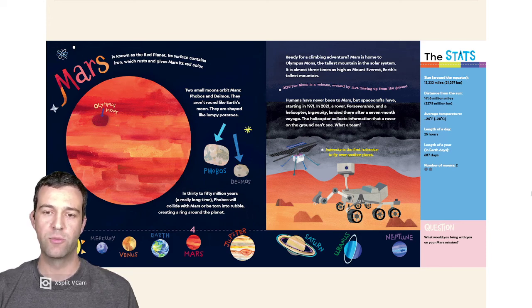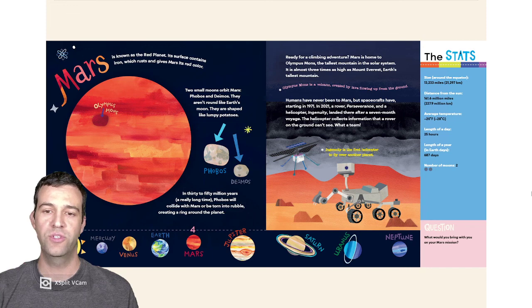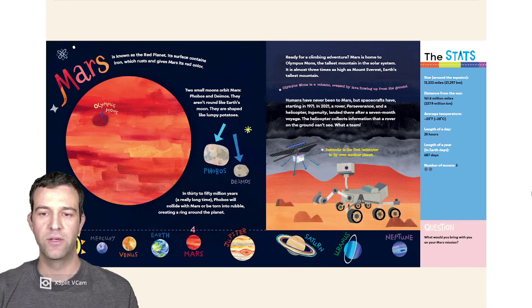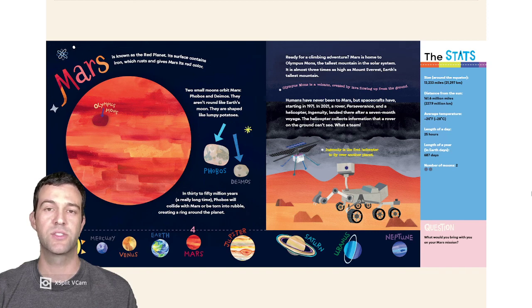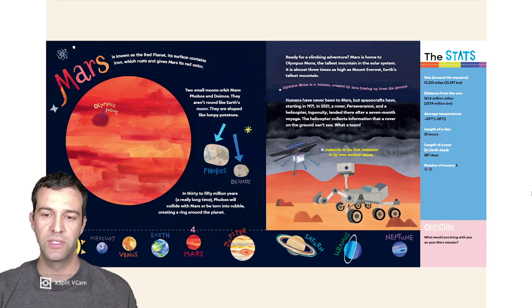Humans have never been to Mars, but spacecrafts have, starting in 1971. In 2021, a rover, Perseverance, and a helicopter, Ingenuity, landed there after a seven-month voyage. The helicopter collects information that a rover on the ground can't see. What a team! Ingenuity is the first helicopter to fly on another planet.